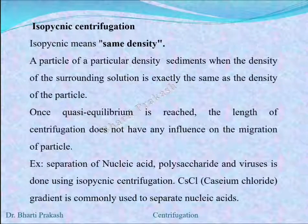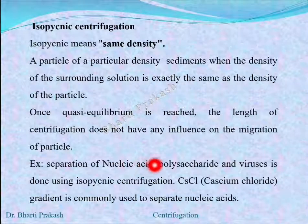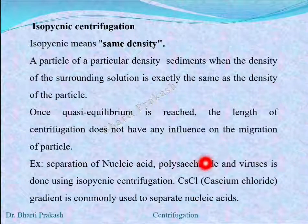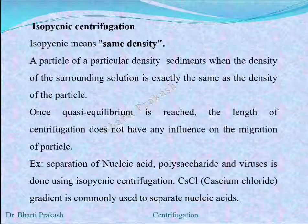Examples include the separation of nucleic acids, polysaccharides, and viruses, which is done using isopicnic centrifugation. The cesium chloride gradient is commonly used to separate nucleic acids.